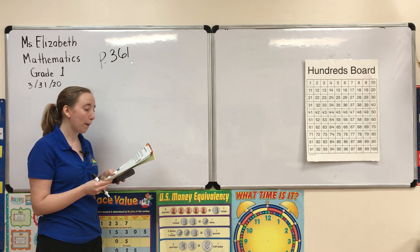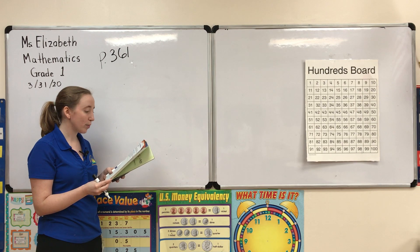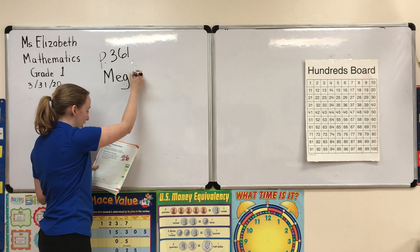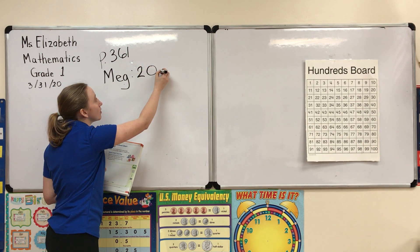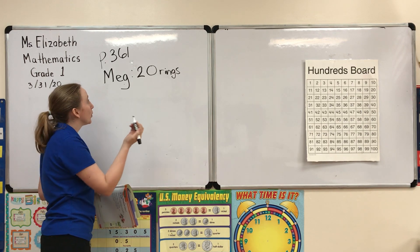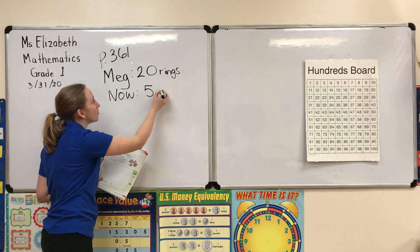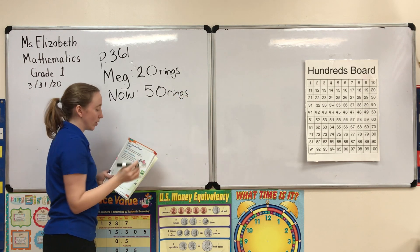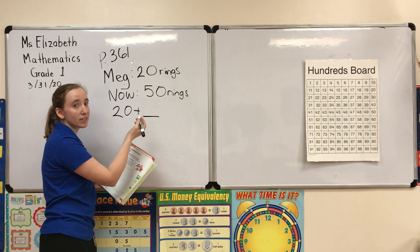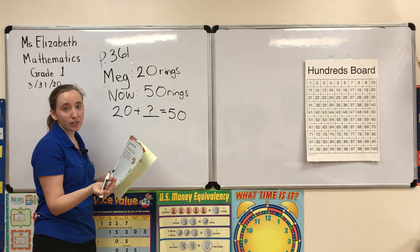Our first question is: Meg has some toy rings. She gets 20 more rings. Now she has 50 rings. How can you find how many rings Meg starts with? We know Meg has 20 rings, she gets some more — we don't know how many more — but we know the total she has now is 50 rings. So we are going to solve this equation: 20 plus unknown equals 50.